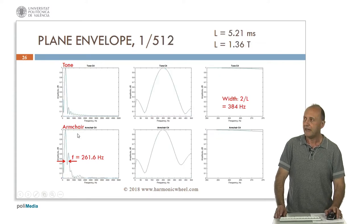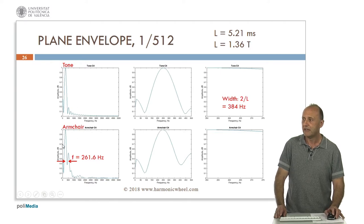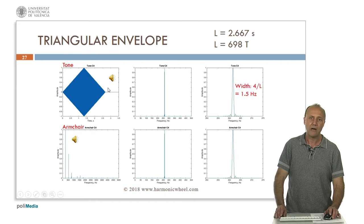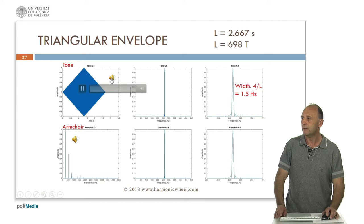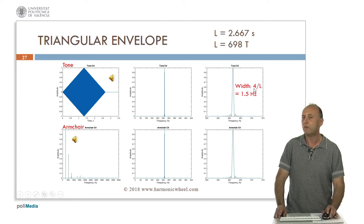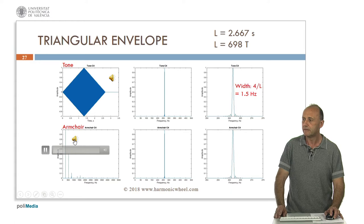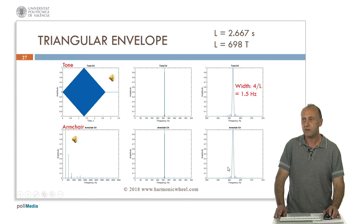Dividing the length by 8 again, the width of the line is near 400 Hertz, and in the case of the armchair we have a full overlap. Now let's consider a triangular envelope — that is crescendo and decrescendo, as can be done for example with a violin or a wind instrument. This is the tone. In this case the spectral line has a width which is double that of the previous case: 4 divided by the length, 1.5 Hertz. And in the case of the armchair with crescendo and decrescendo, we have several lines, each of them equal to the one in the tone.